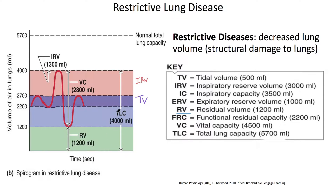The total lung capacity obviously is going to go down. So let's take a look. Total lung capacity — usually it's 5,700, but now it's 4,000. So that's the most glaring difference.